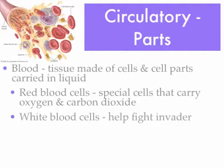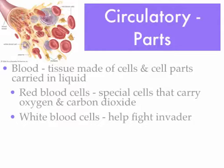Another type of blood cell found in blood are white blood cells. You'll learn more about the different types of white blood cells when you get to human body step 9 and start studying the immune system. White blood cells help fight invaders, and you can see in the picture they're the really big blood cells and they're almost purplish looking.